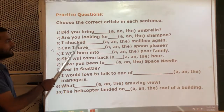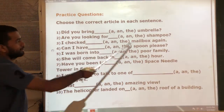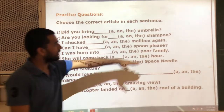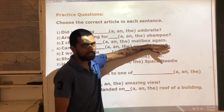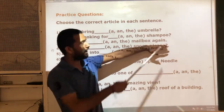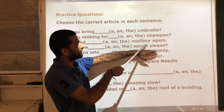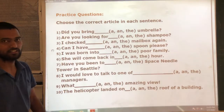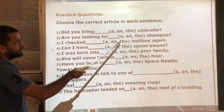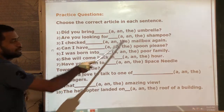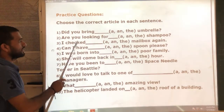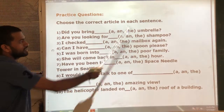Next: 'I checked ___ mailbox again.' The word 'again' tells us the mailbox was already specified in the past, so you must use the article 'the'. I checked the mailbox again.